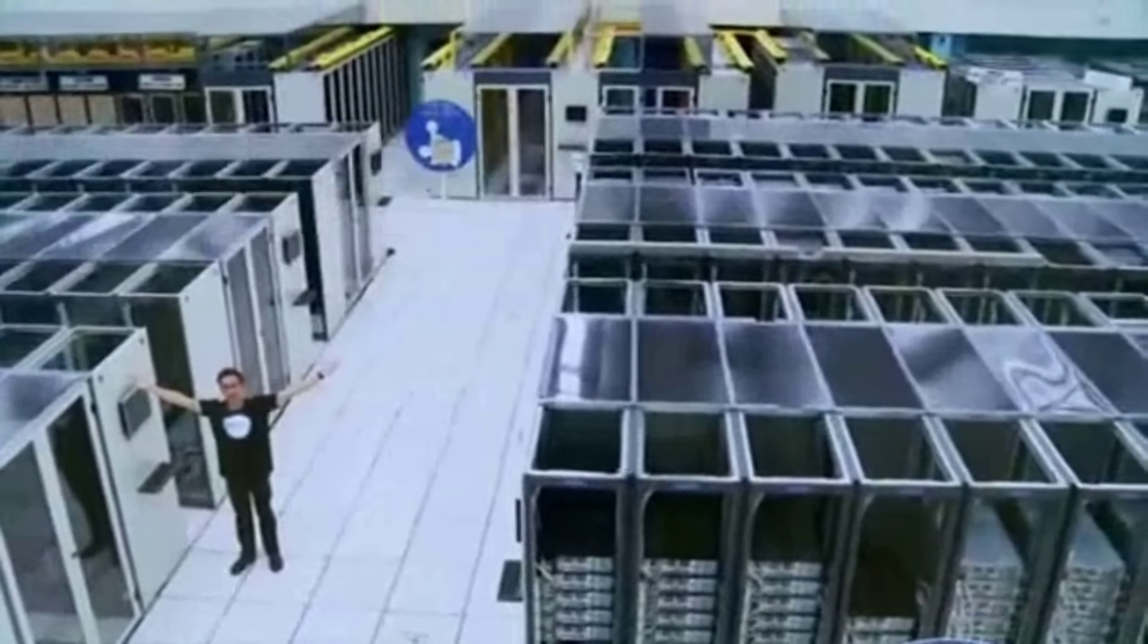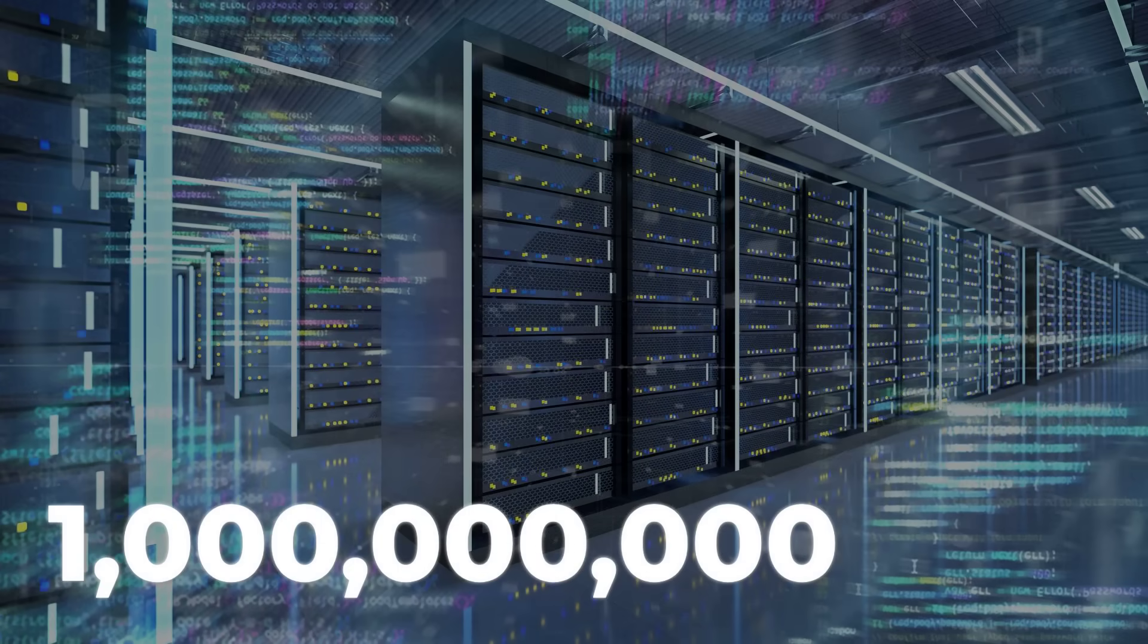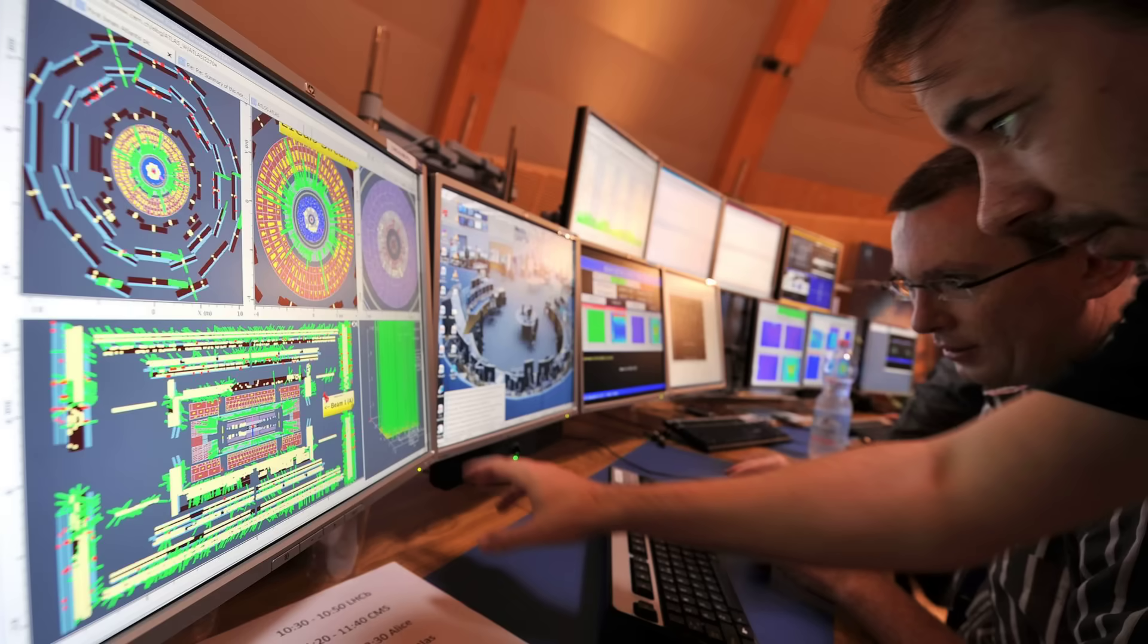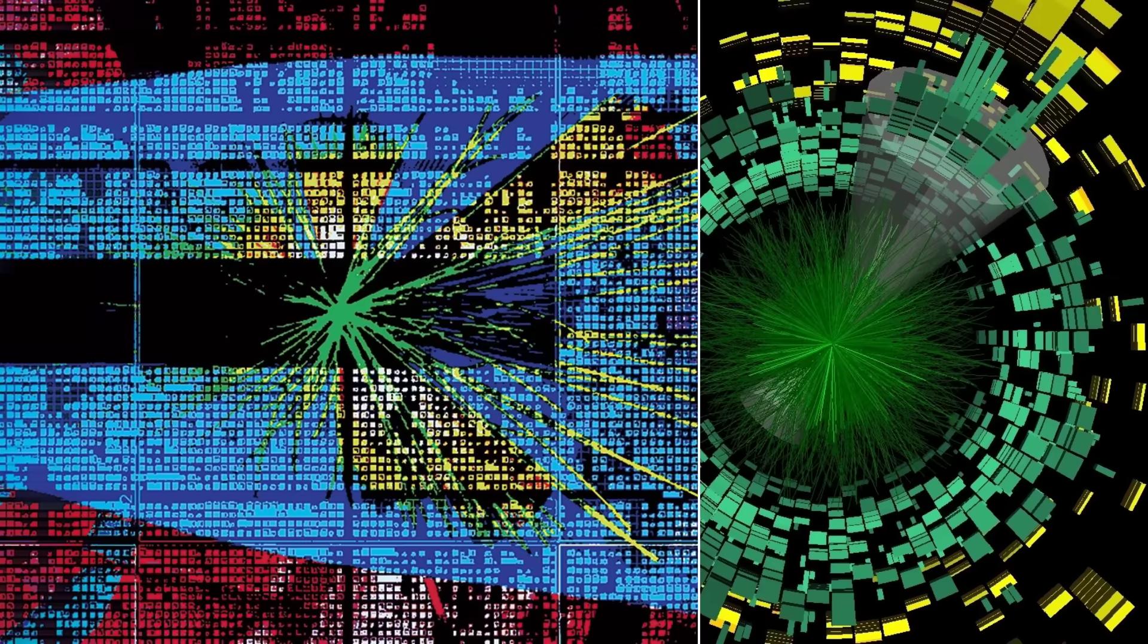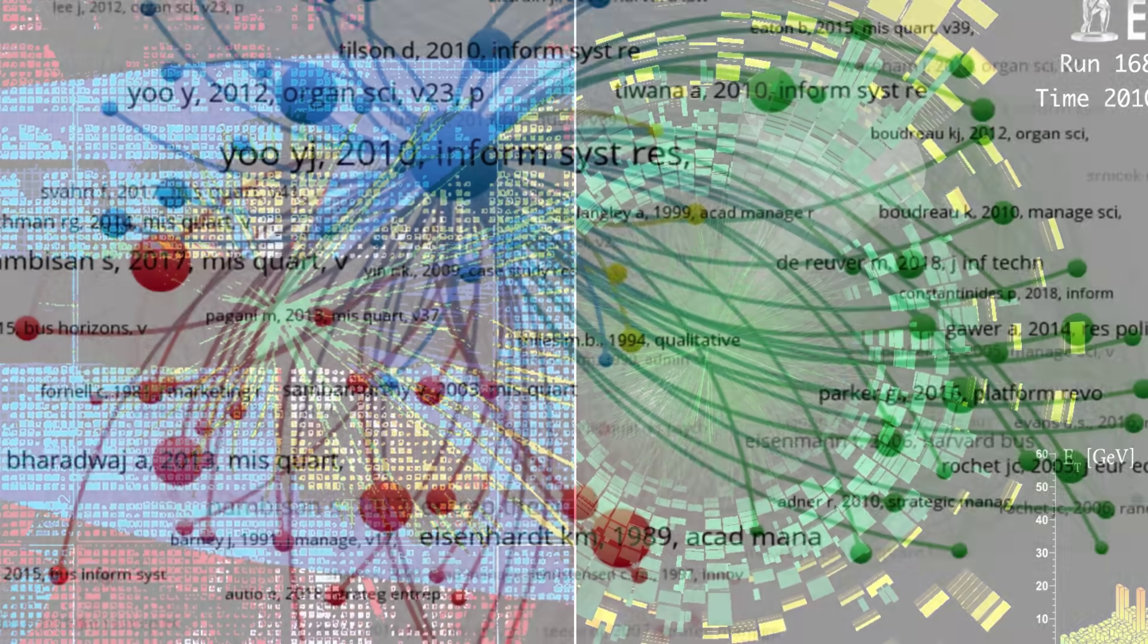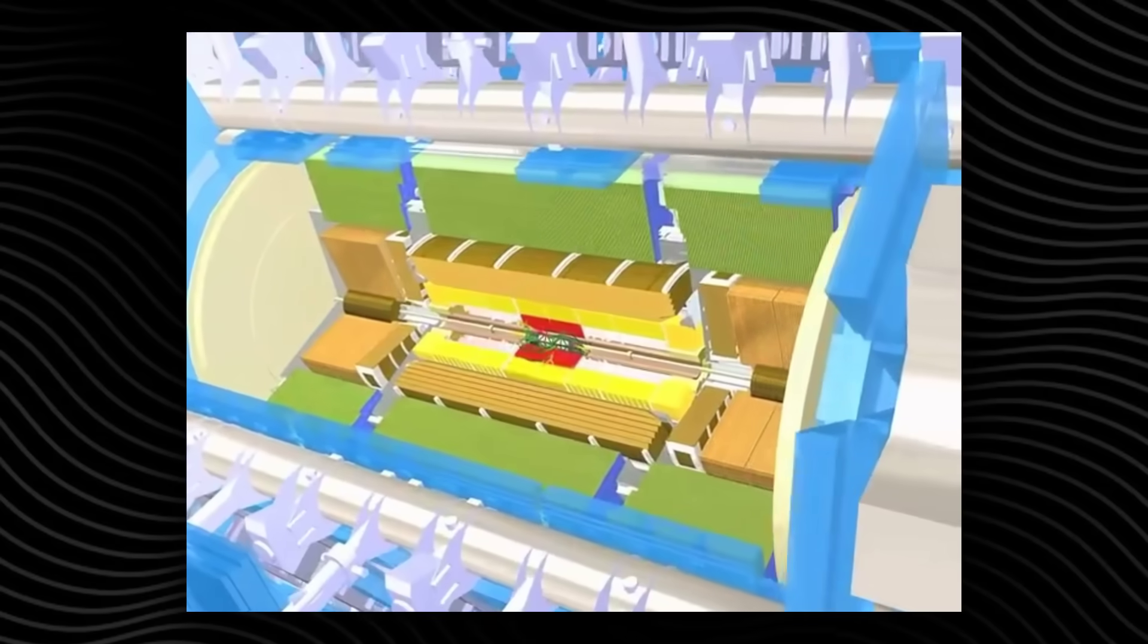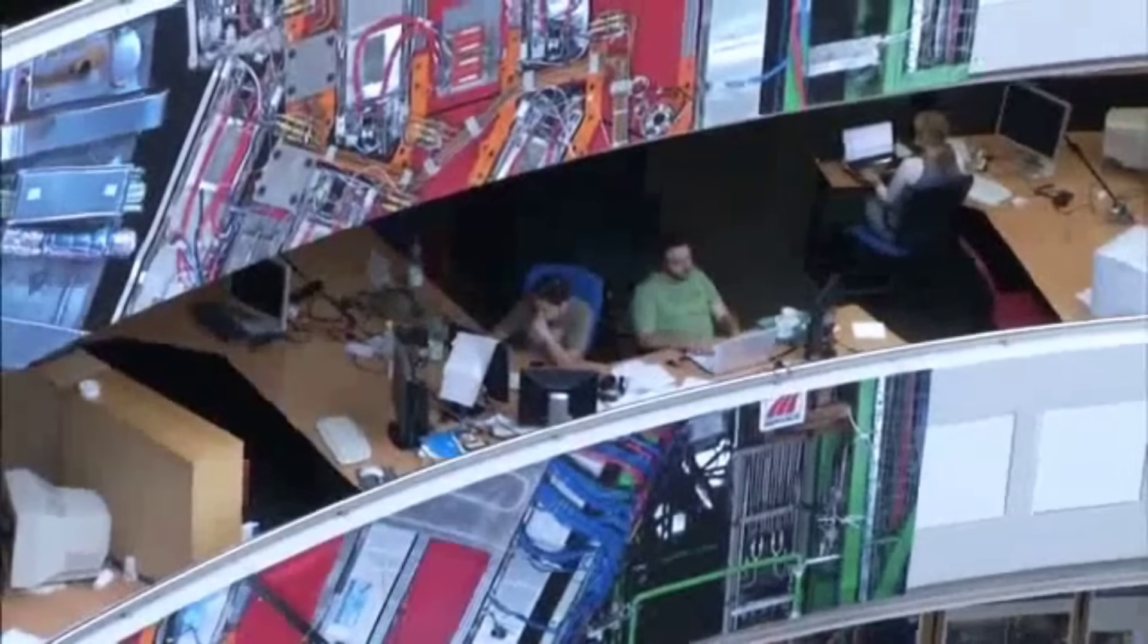These machine learning tools operate at a scale and speed no human team could match. Every second, ATLAS records up to a billion collisions, generating data that would fill a stack of DVDs reaching to the moon each year. The AI triage system whittles this torrent down to the handful of events that might rewrite physics. Without it, the 3i signal would have vanished, lost in the blizzard. This is the new reality of discovery. Machines now serve as the first line of detection, seeing patterns and possibilities that even the sharpest human eyes would miss. The future of physics depends on algorithms that can find the impossible and on researchers willing to trust what the machines reveal.